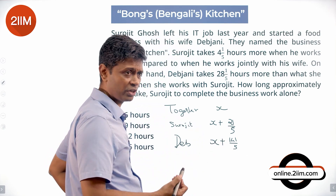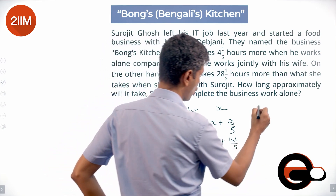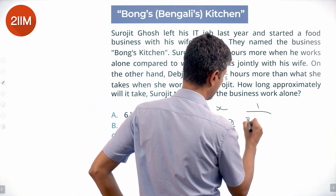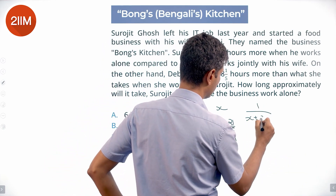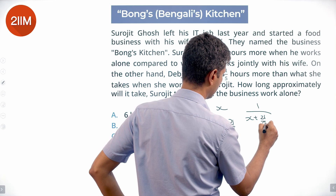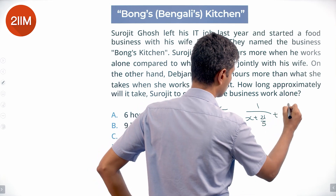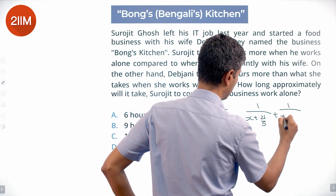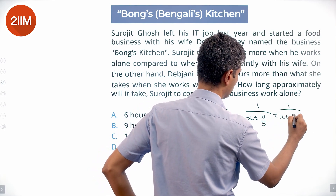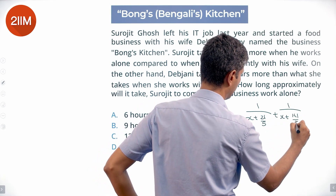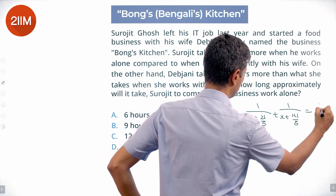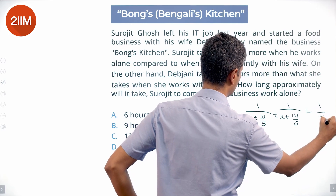Our equation is: 1/(X + 21/5) + 1/(X + 141/5) = 1/X.